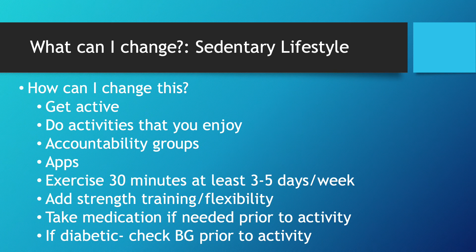Usually exercise guidelines say at least 30 minutes, at least three to five days a week. It depends on what kind of cardiovascular disease you have and any restrictions. Preference is for five days a week, at least 30 minutes. We say moderate intensity exercise — meaning it would be a little bit difficult to breathe and talk at the same time. Adding strength training and flexibility is also another great option to help increase muscle strength and increase their blood flow.